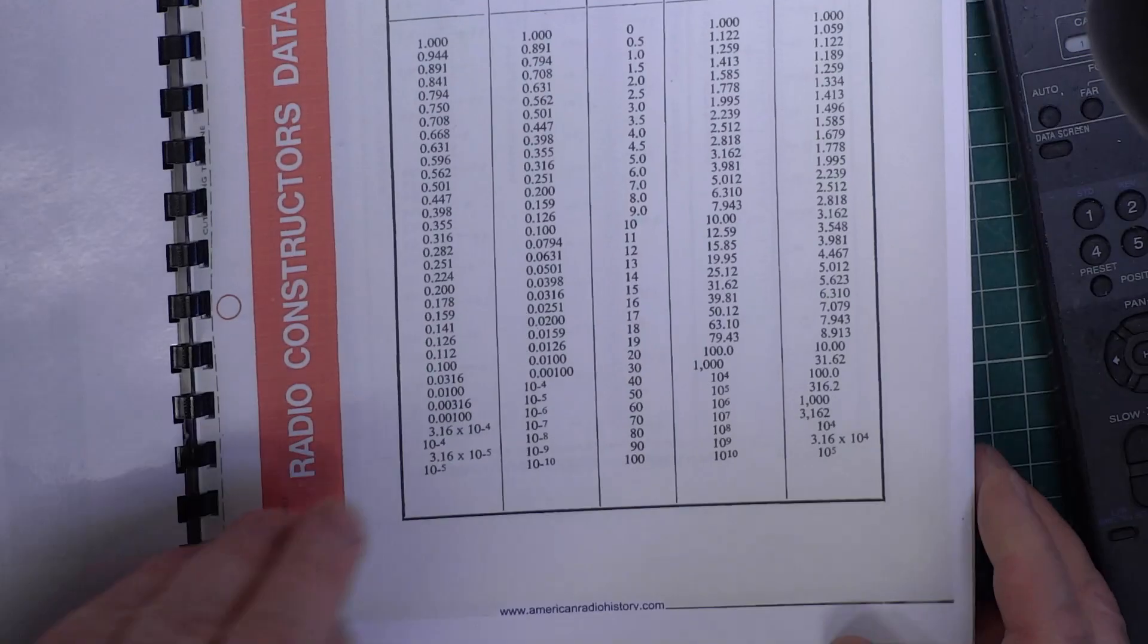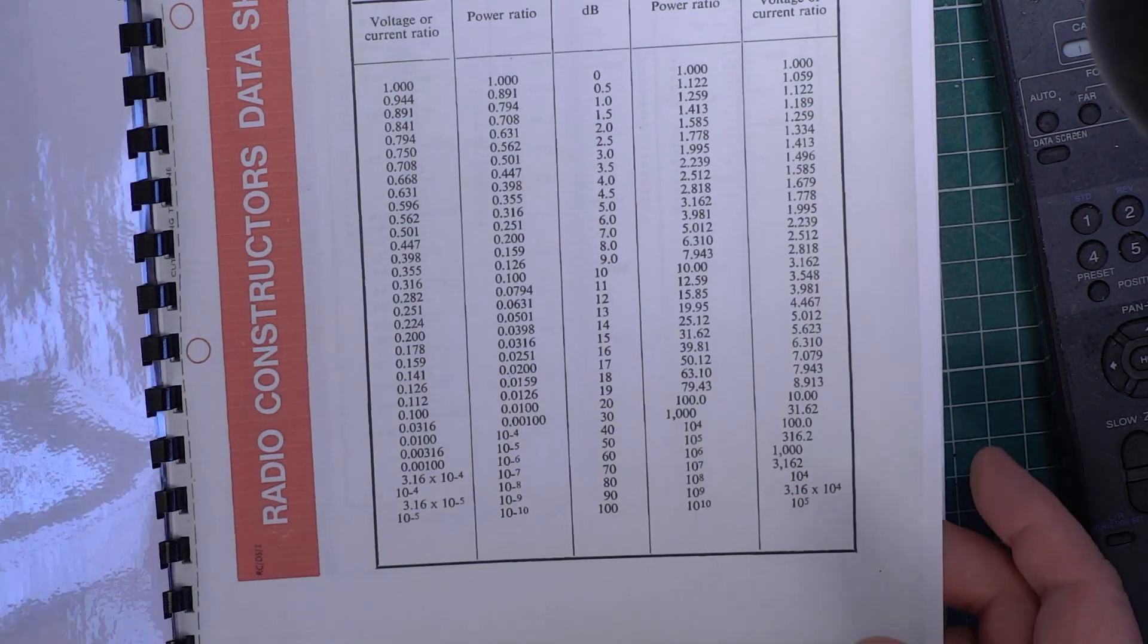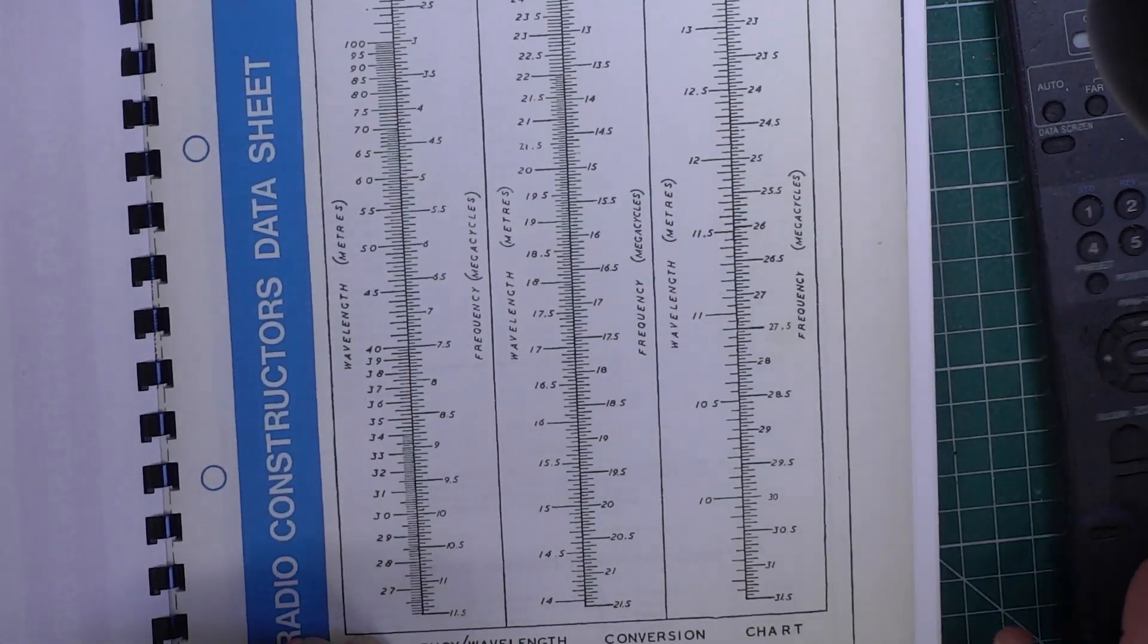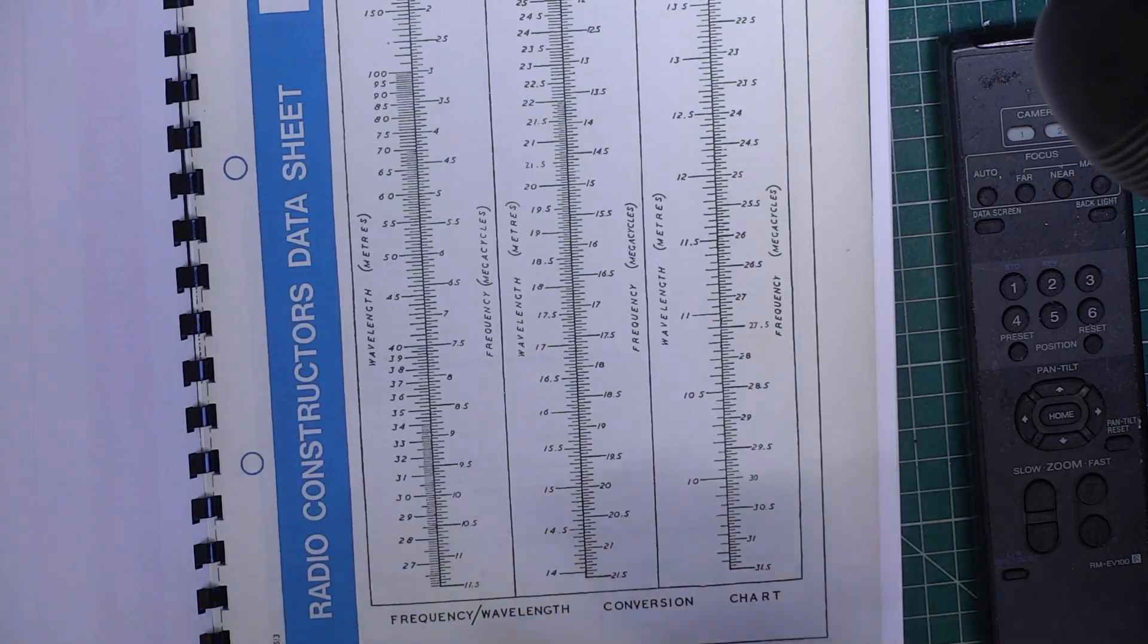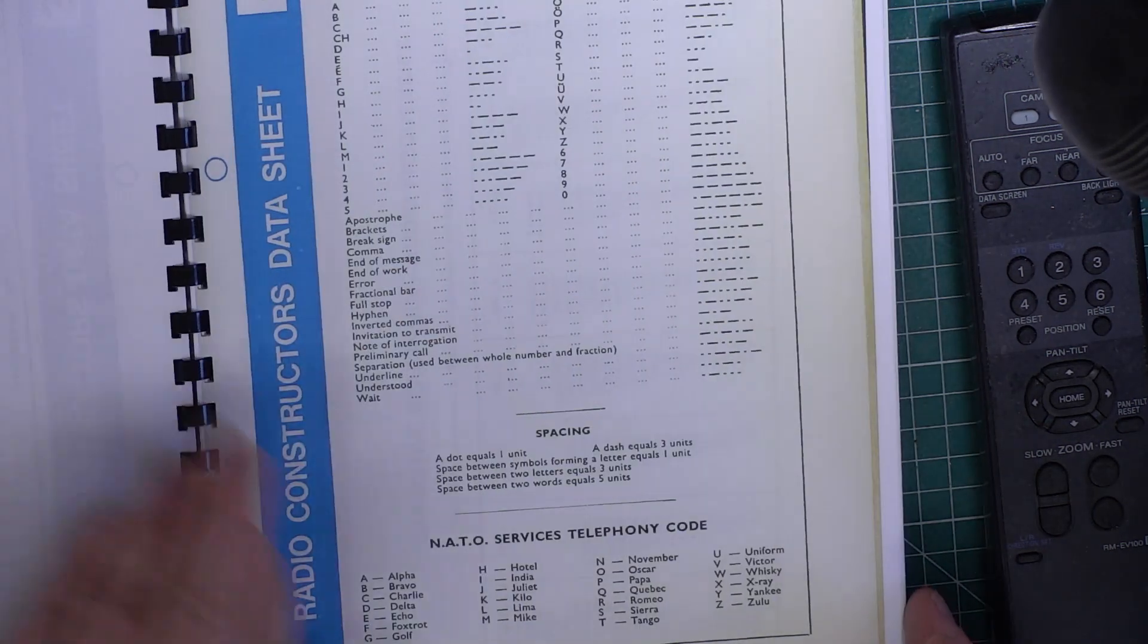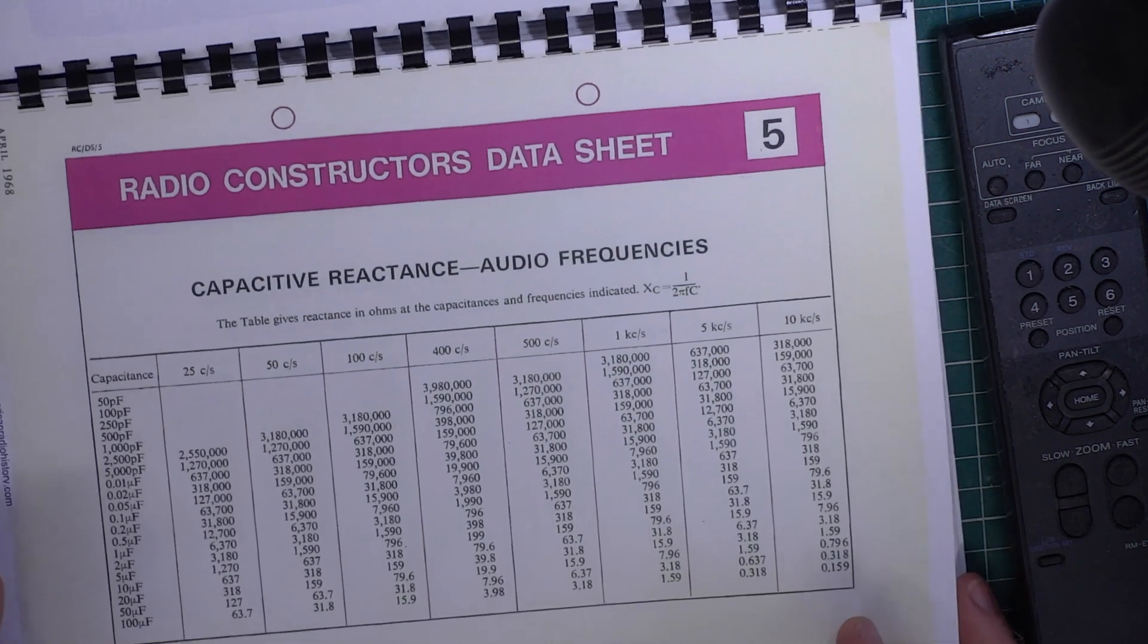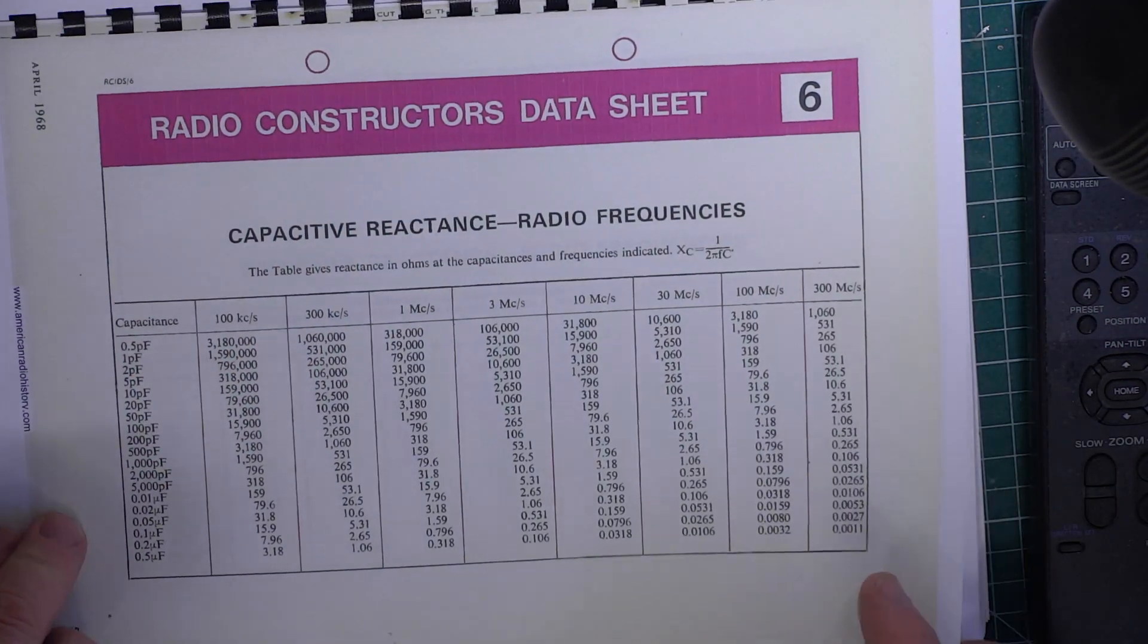Things like a decibel table, that's really useful. What the power ratios are to do the calculations. Frequency to wavelength conversion. Oh, it's delivered me a pair of glasses. It's page three. When did this start? It started in February 1968. So your issue number one is February 1968. Number four, we've got the Morse code. Number five, capacitative reactance for audio frequencies. Things like that. If you're into that, that would be difficult to come up with.